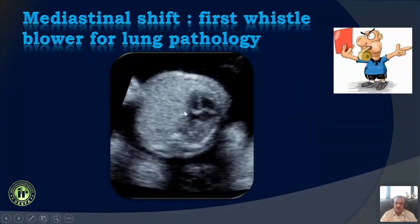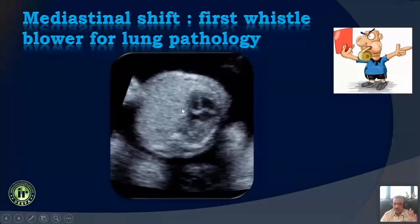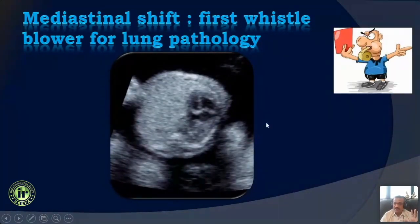Here, for example, we can see that the entire mediastinum is shifted to the left, but the apex of the heart is still pointing to the left. That is a classical mediastinal shift, and it is the first whistleblower that something is wrong in the thorax or in the lung.